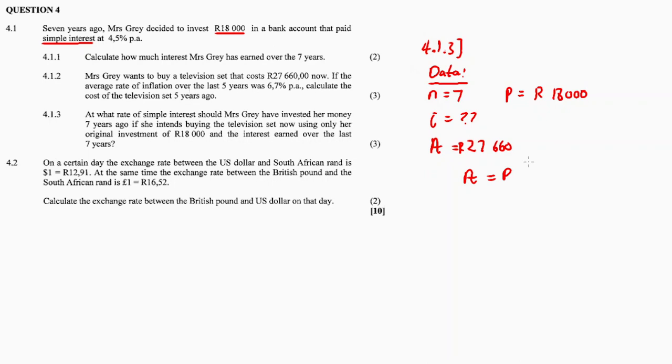We need to find i. The accumulated amount is the price of the television, 27,660. The present value is 18,000. Using simple interest, A = P(1 + i × n), so 27,660 = 18,000(1 + i × 7). Therefore, 27,660 divided by 18,000 equals 1 + 7i. Rearranging: (27,660/18,000) - 1 = 7i.